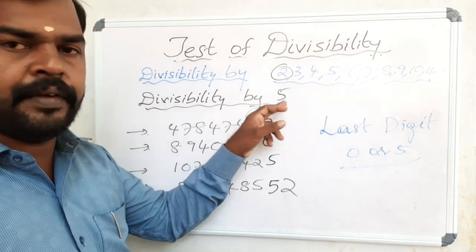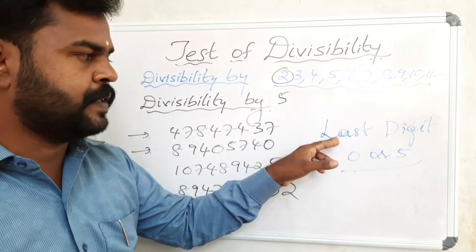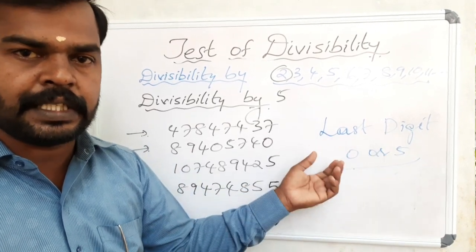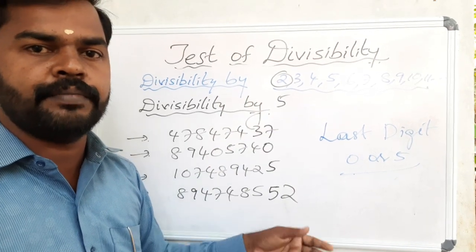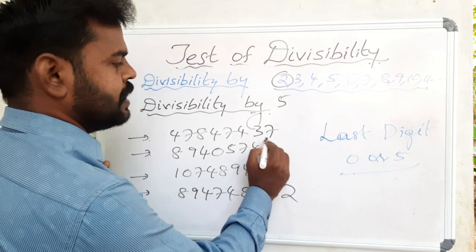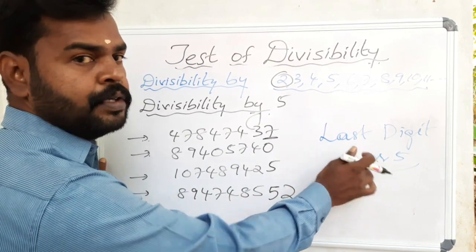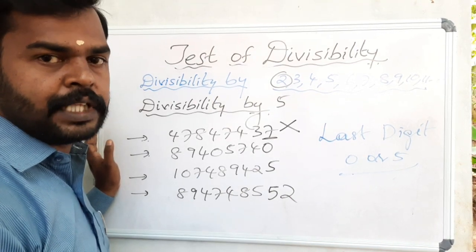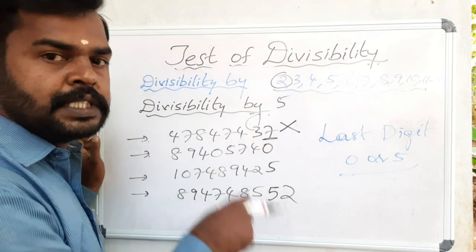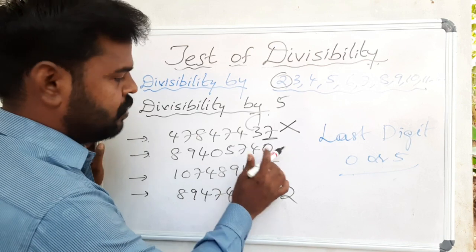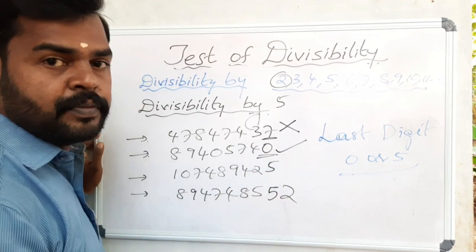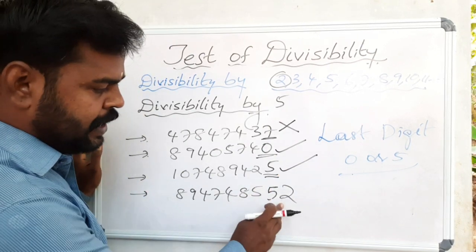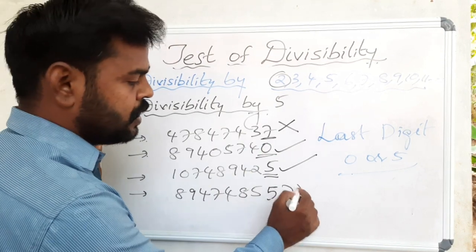Next, divisibility by 5. We should see only the last digit. If the last digit is 0 or 5, then the whole number is divisible by 5. See here: last digit is 7, not 0 or 5, so we cannot divide by 5 with remainder 0. Next: last digit is 0, so this number is divisible by 5. Next: last digit is 5, also divisible by 5. Last: last digit is 2, not 0 or 5, so not divisible by 5.